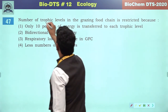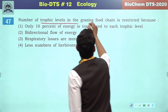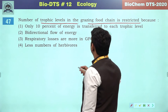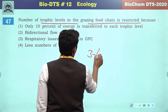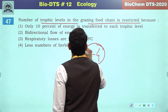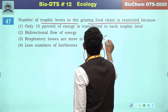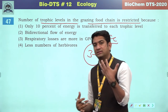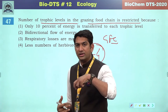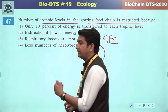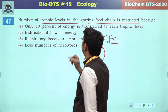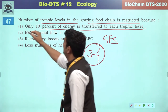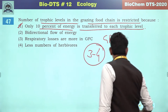The number of trophic levels in the grazing food chain is restricted because generally there are only 3-4 trophic levels in the GFC. From the lower trophic level to higher trophic level, energy is always reduced — only 10% of energy is transferred to each trophic level. So the first will be the correct answer.